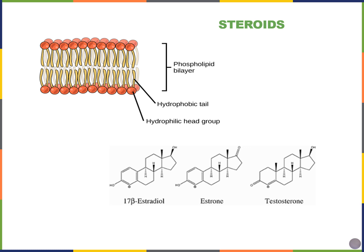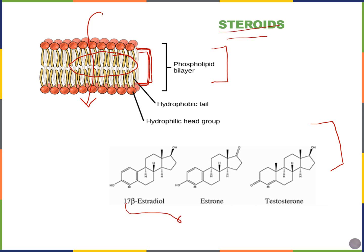Looking at the combination of the phospholipid bilayer and steroids: most things cannot pass into or out of the cell because of the hydrophobic region. For instance, glucose is water-loving and does not mix well with the hydrophobic interior. However, steroids like estrogen and testosterone can pass through because they are lipophilic — fat-loving or water-fearing. This is one reason we can take hormones orally or through a patch on the skin surface — they can diffuse across and into our cells.